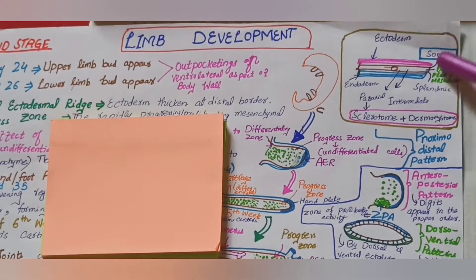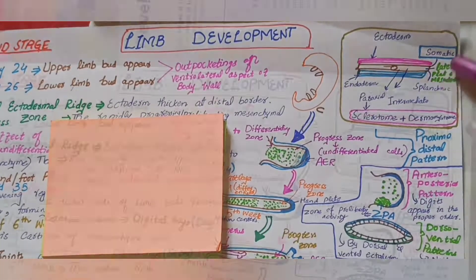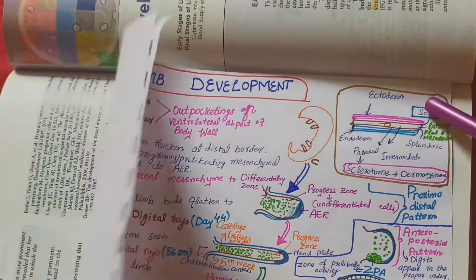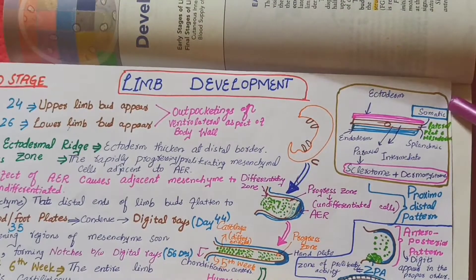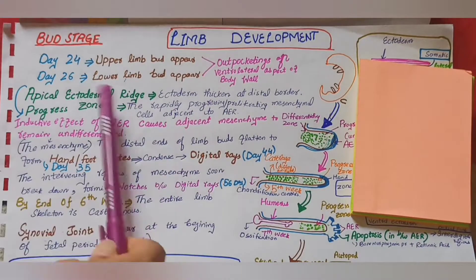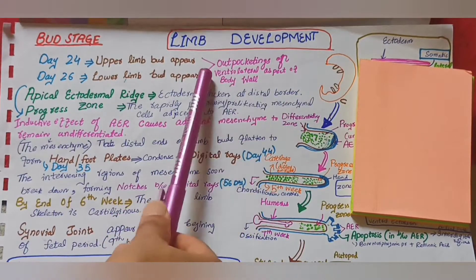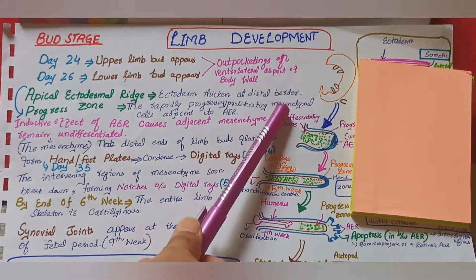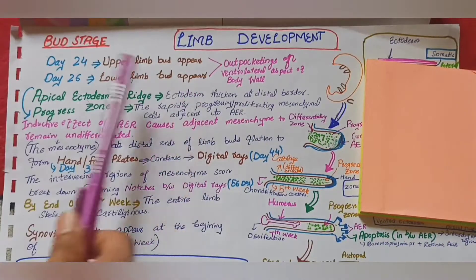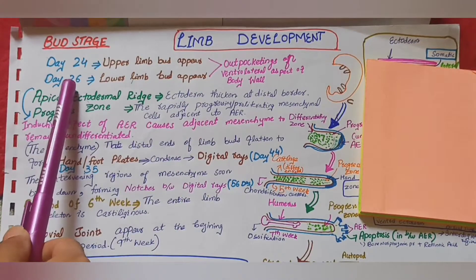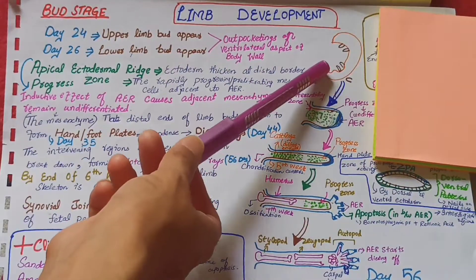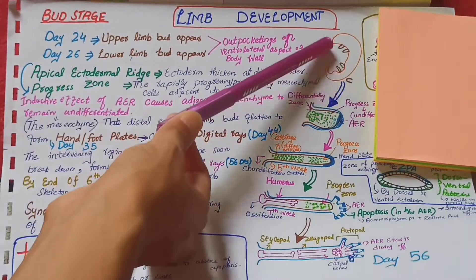The lateral plate mesoderm is further composed of two layers: the somatic layer and splanchnic layer. The somatic or parietal layer is responsible for giving rise to limb buds — upper limb bud and lower limb bud. The limb buds appear as outpocketings on the ventrolateral aspect of the body wall. The upper limb buds appear at day 24, and after two days the lower limb buds appear at day 26.